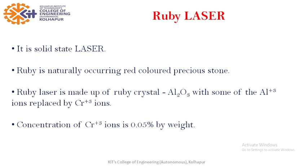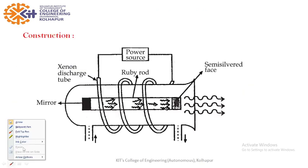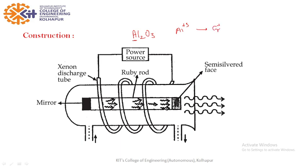Ruby laser is a solid state laser because ruby is crystal. We know ruby is naturally occurring red color precious stone. What is its chemical composition? It is Al2O3 with some of the Al+3 ions replaced by Cr+3. And percentage of chromium is 0.05 percent.